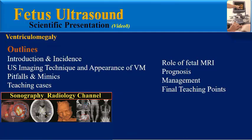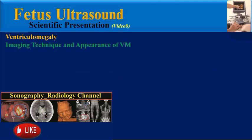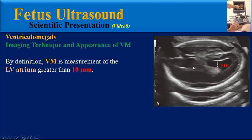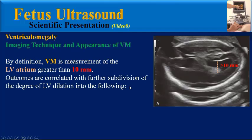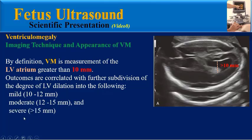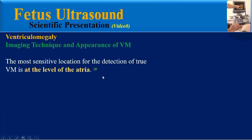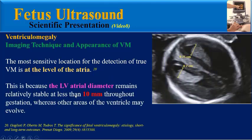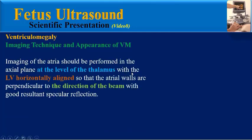By definition, ventriculomegaly is a measurement of the lateral ventricle atrium greater than 10 mm. Outcomes are correlated with further subdivision: mild is 10 to 12 mm, moderate 12 to 15 mm, and severe more than 15 mm. The most sensitive location for detection is at the level of the atria, because the lateral ventricle atrial diameter remains relatively stable at less than 10 mm throughout gestation.